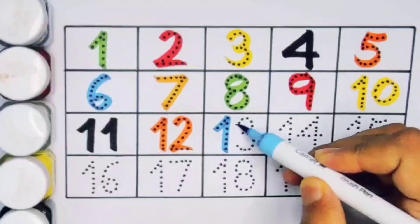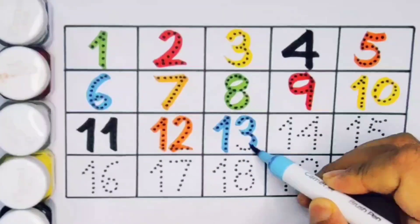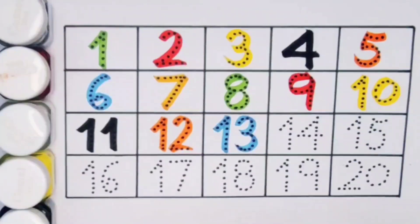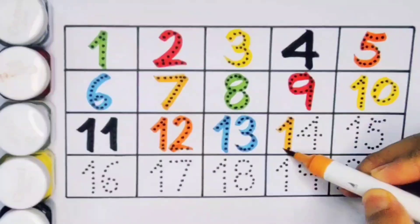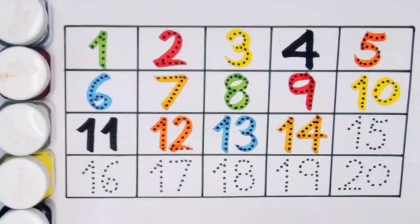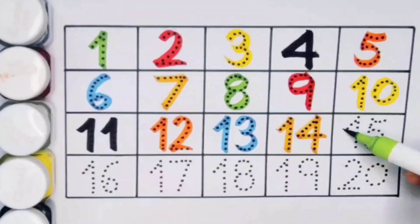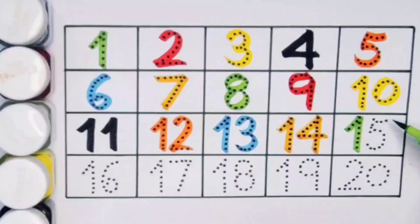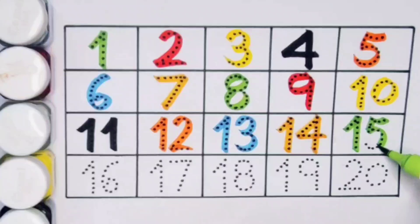Next kids, thirteen, one three, number thirteen. Next kids, fourteen, one four, number fourteen. Next kids, fifteen, one five, number fifteen.